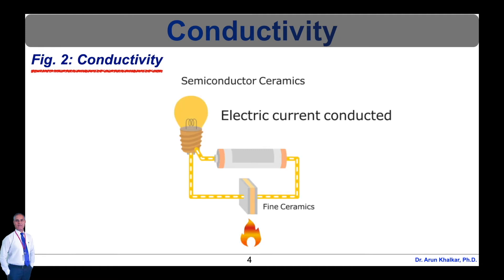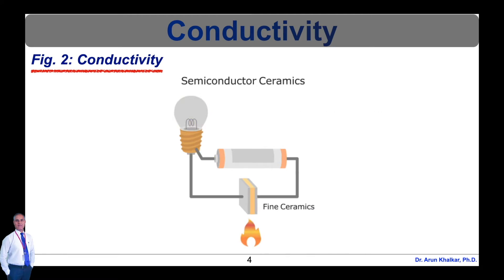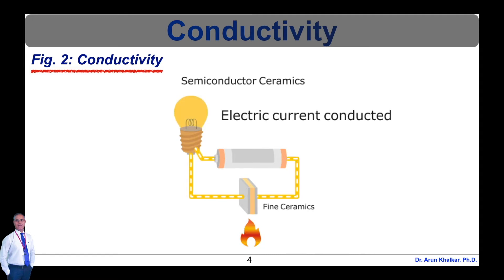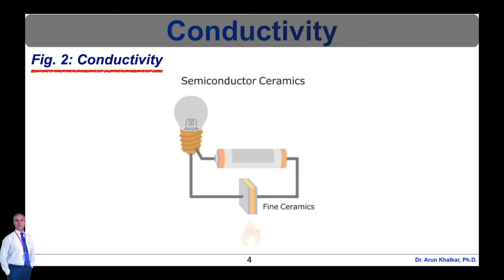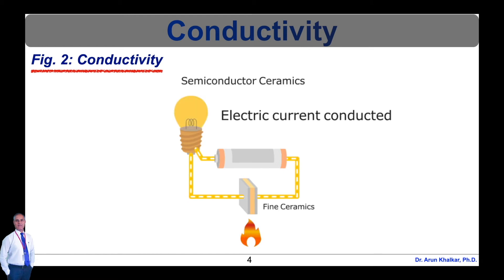A thermistor is an electronic component that utilizes a property in which electrical resistance decreases as temperature increases, allowing electricity to flow more easily when the material gets hot. These devices are used in sensors that monitor temperature changes and in equipment designed to prevent electronics from overheating. A varistor is a similar component that possesses a property in which resistance decreases as voltage increases. Varistors are used to protect electronic circuits from excessive voltages.